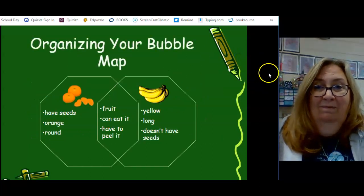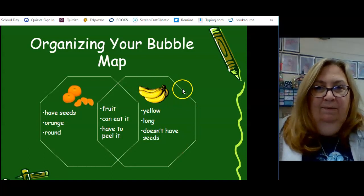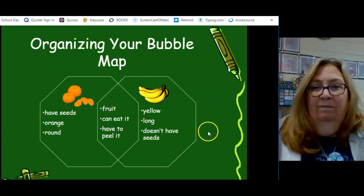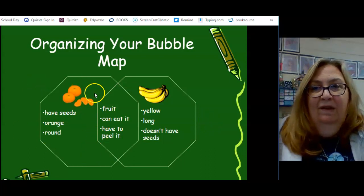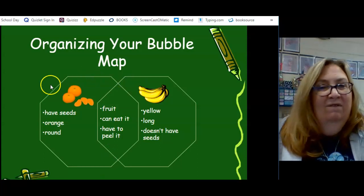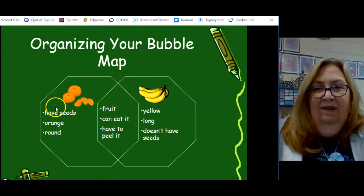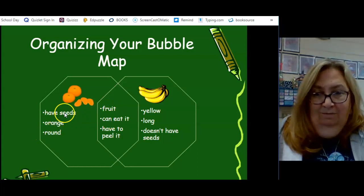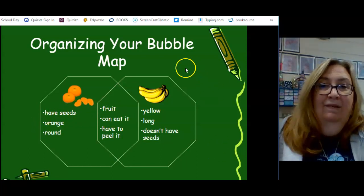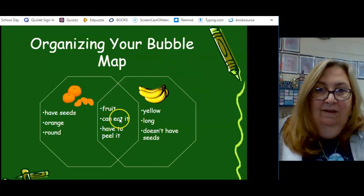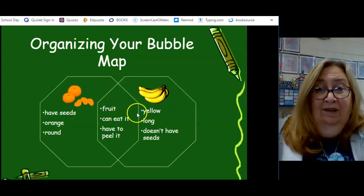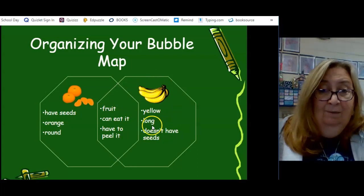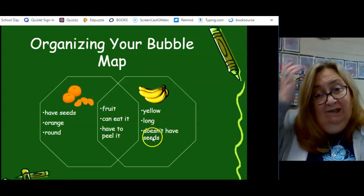So, in this one, these can be circles. I'm not really sure why we got all fancy and decided to make octagons out of them. But it's the same. If they were circles, it would work the same. So, in this circle here, we have all the things that are true of oranges. They have seeds. They're fruit. They're orange. We can eat it. They're round and we have to peel it. But in this octagon, we have all things that are true about bananas. They're fruits. They're yellow. We can eat it. Its shape is long. We have to peel it and it doesn't have seeds.